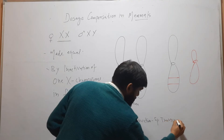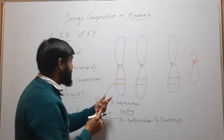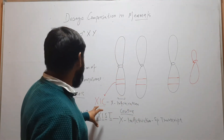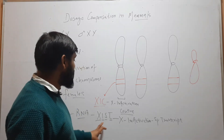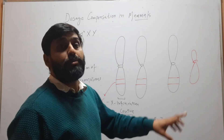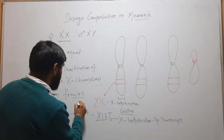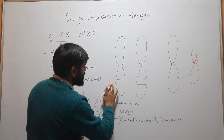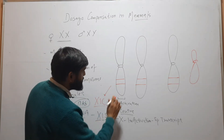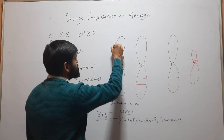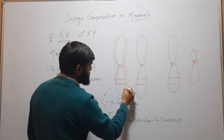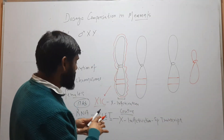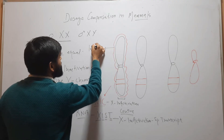The XIC expresses and forms an RNA called XIST — X Inactivation Specific Transcript. This XIST RNA is 17 kb in size. The chromosome destined to become inactive expresses XIST, and this RNA will cover the whole chromosome on which it is expressed, making that X chromosome inactive.